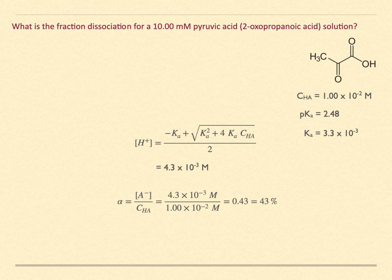We equate this to the conjugate base concentration and obtain the fraction dissociation of 0.43, or 43%. So compared to the 8% for the same formal concentration for 2-naphthenoic acid, we find that the stronger acid has more dissociation. And that probably makes sense. The stronger acid is more acid-like and dissociates to produce more hydronium ion.